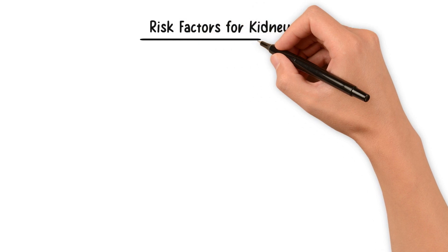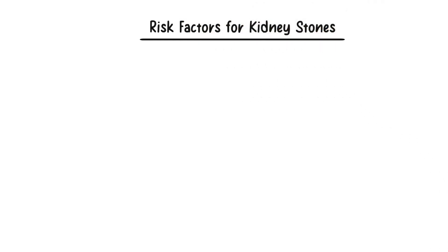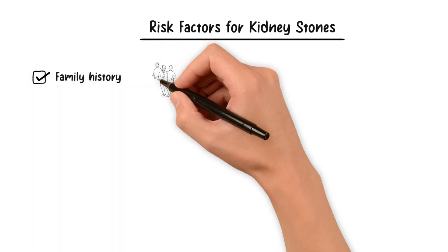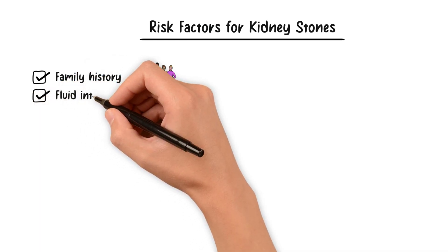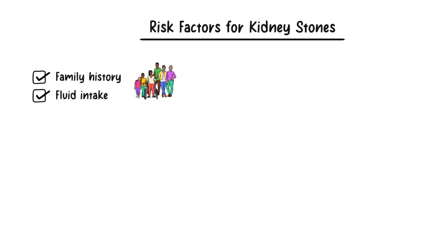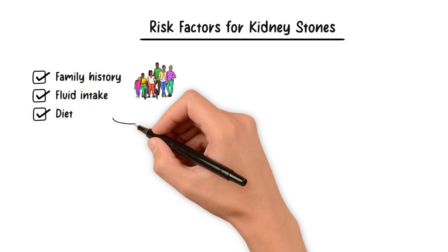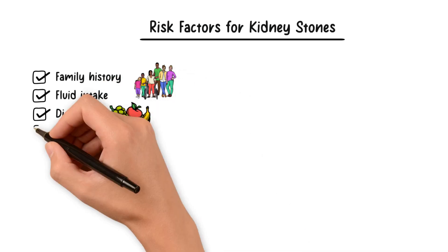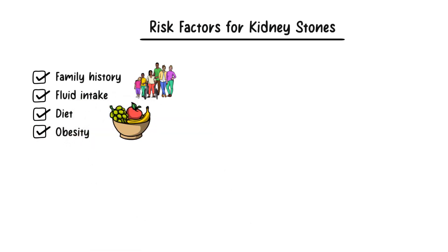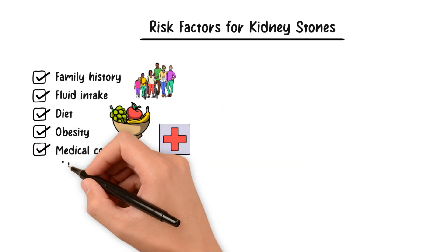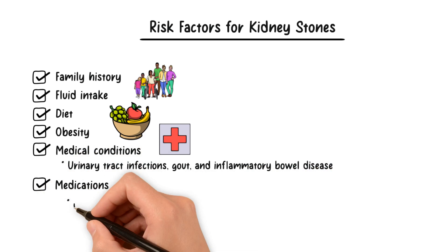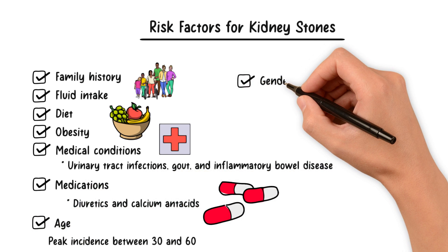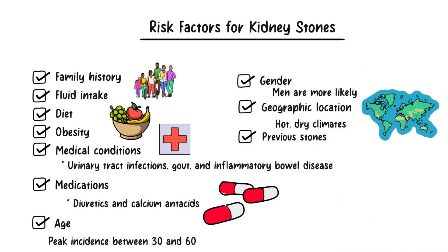Kidney stones can affect anyone, but they tend to have a few key risk factors associated with their development. Family history can be a significant determinant — if someone in your family has had kidney stones, it may imply a genetic predisposition that elevates your risk. Dehydration is a critical factor as well; insufficient water intake leads to concentrated urine, which can facilitate crystallization. Dietary choices matter, particularly the consumption of foods rich in oxalates and sodium. Obesity also plays a role due to metabolic changes and insulin resistance. Underlying medical conditions such as urinary tract infections, gout, and inflammatory bowel disease can contribute to stone formation. Medications like diuretics and calcium antacids are known culprits. Age, gender, geography, and a history of previous kidney stones all factor into your risk profile.